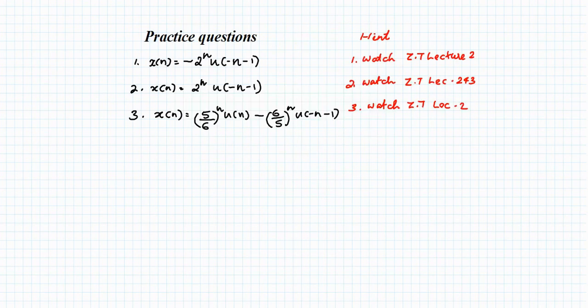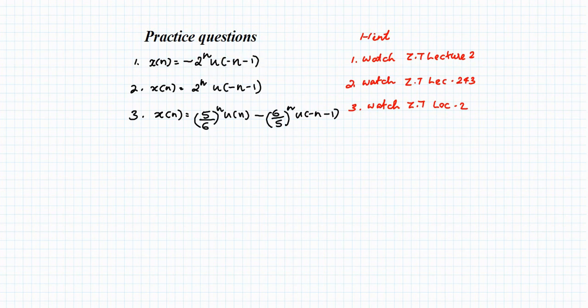Some practice questions are provided. Question 1: find the Z-transform of −(2^n) · U[−n − 1]. Question 2: find the Z-transform of 2^n · U[−n − 1]. Question 3: find the Z-transform of (5/6)^n · U[n] − (6/5)^n · U[−n − 1]. Refer to Lectures 2 and 3 for help; solutions will be discussed in the next lecture.